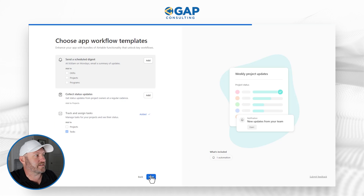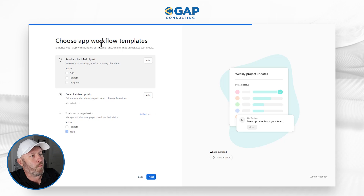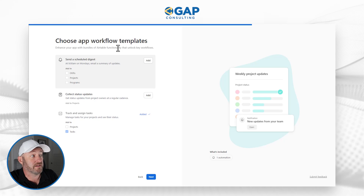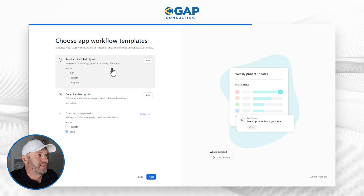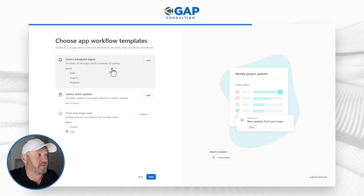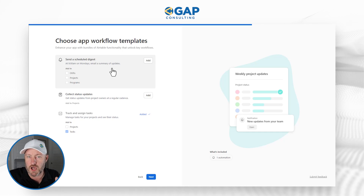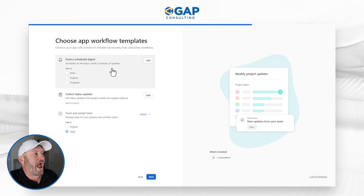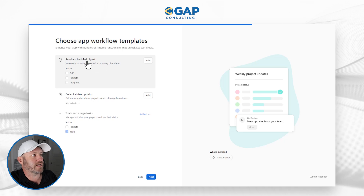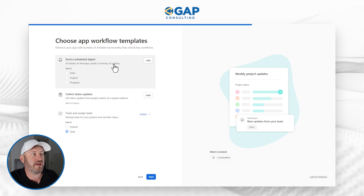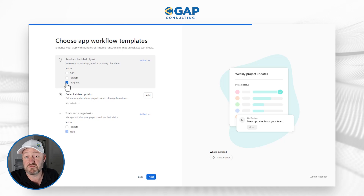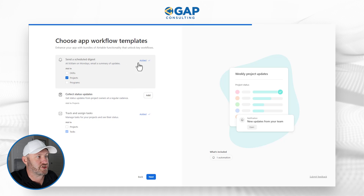It's now saying 'choose app workflow templates' — enhance the app with bundles of Airtable functionality. I really like this concept because I'm able to essentially talk about streamlining workflows right out of the gate. Now that I've chosen the different components of my particular app, it's saying add these different workflows. Let's just add them all. This one is going to send a scheduled digest on Monday — a summary of any updates — and I can add it to OKRs, projects, or programs. Let's add it to projects and see what that looks like.